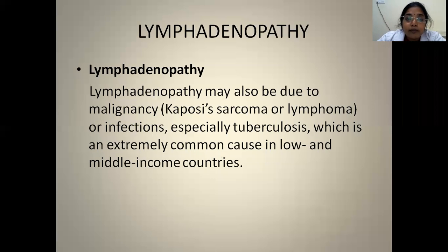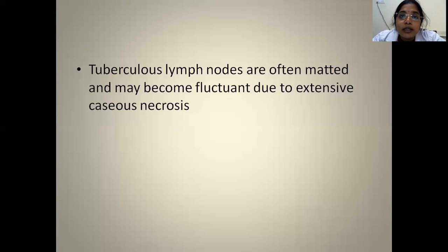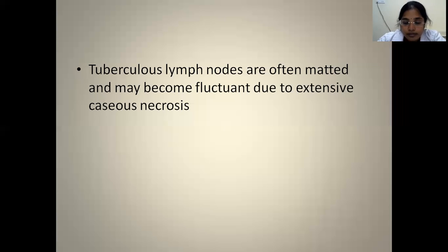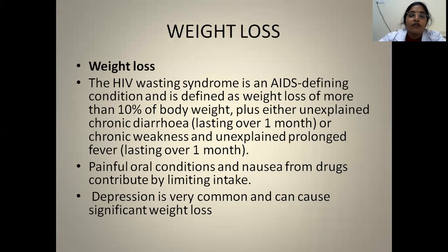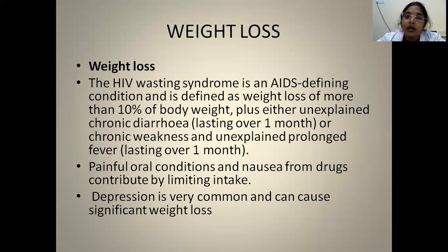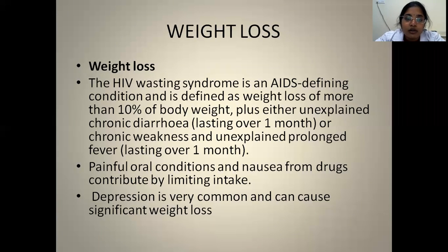AIDS patients can present with lymphadenopathy due to infections or malignancies like lymphomas and Kaposi's sarcoma, but TB should always be considered especially in low and middle income countries. Tuberculosis lymph nodes are multiple, matted, and can be fluctuating due to extensive caseous necrosis. Weight loss is one of the major manifestations in AIDS patients — this is called HIV wasting syndrome, defined as weight loss of more than 10% of body weight plus unexplained diarrhea plus chronic weakness and unexplained prolonged fever for more than one month. This weight loss is due to reduced food intake and chronic inflammatory condition.